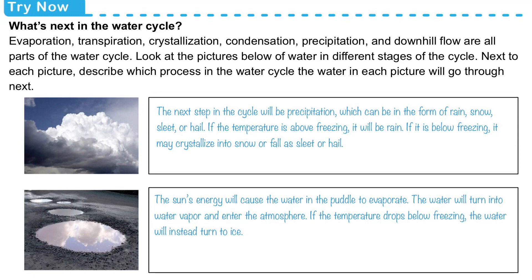What can also happen is if the temperature drops below freezing, then the water will freeze instead of evaporating. We'd have a frozen puddle that will stay frozen until the temperature goes back up, causing that ice to turn back into liquid water, and then if it heats up more it will go from liquid water to water vapor.